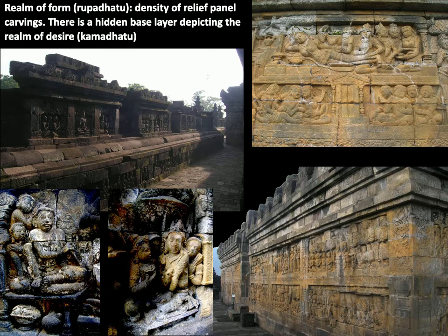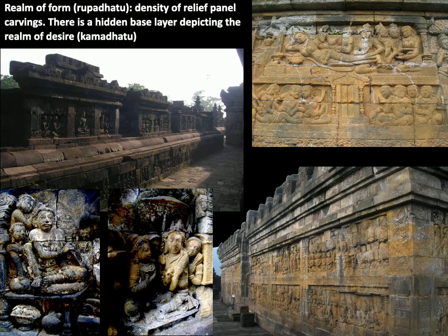There is a hidden component that depicts the realm of desire — the Kamadhatu — which includes activities associated with human desires such as greed, sex, and trying to do good: all things related to activities in this world. Very early on, after the base was built, it was quickly decided this was not meant to be shown, so it was buried and covered up, never forming the main visible part of the monument. The hidden base is in some ways the most interesting because it includes characters like businessmen, bankers, children, and animals — very relatable things that we still connect with as part of what makes us human.